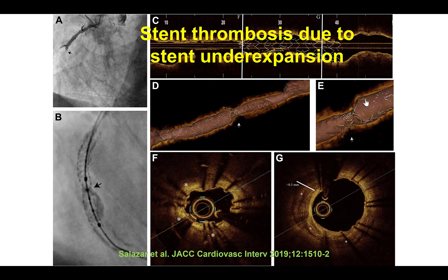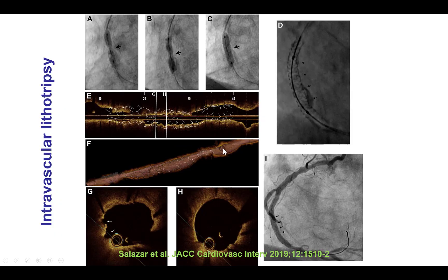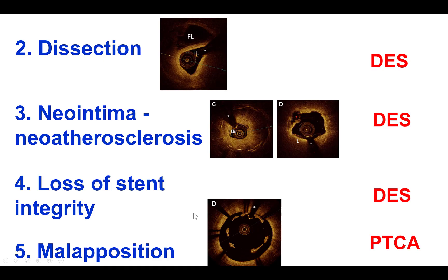This is another patient who presented with acute stent thrombosis in the setting of stent under-expansion. This can be seen using stent boost technology as well as with optical coherence tomography. The stent could not be expanded with high-pressure balloon inflations; however, a lithotripsy balloon was used which successfully expanded the stent, as seen both angiographically and by optical coherence tomography.